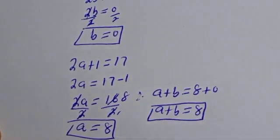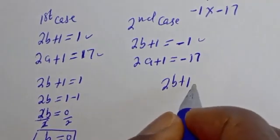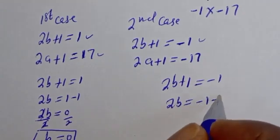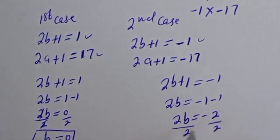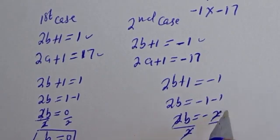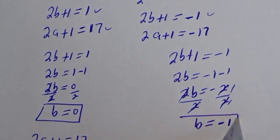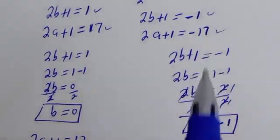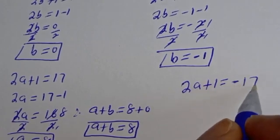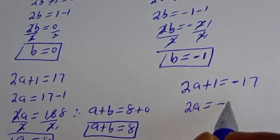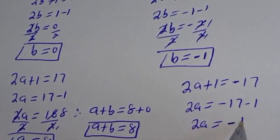Now let's consider the second case. From the second case: 2b plus 1 is equal to minus 1, so 2b is equal to minus 1 minus 1, giving 2b equal to minus 2. Dividing by 2, b is equal to minus 1. Also, 2a plus 1 is equal to minus 17, so 2a is equal to minus 17 minus 1, giving 2a equal to minus 18.